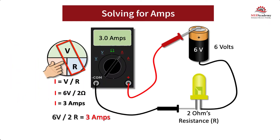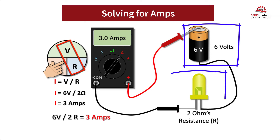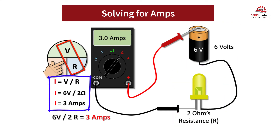Solving for Amps using a digital meter, we can determine how many Amps are flowing through a circuit. If we cover up the I in the Ohm's Wheel to solve for Amps or Current flowing through the system, we can see that the two known values of 6 Volts and 2 Ohms of Resistance work within the formula. This gives us 6 Volts divided by 2 Ohms equals 3 Amps.